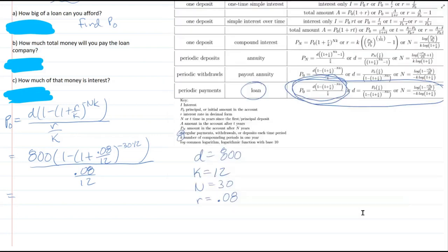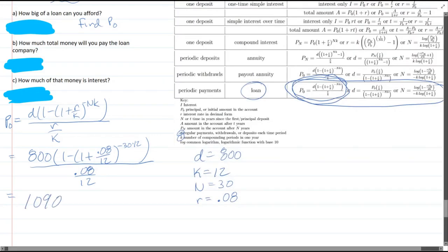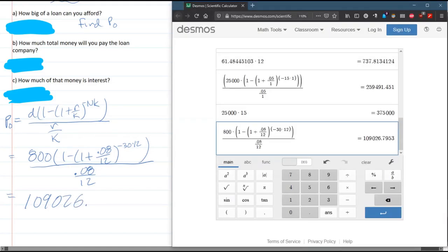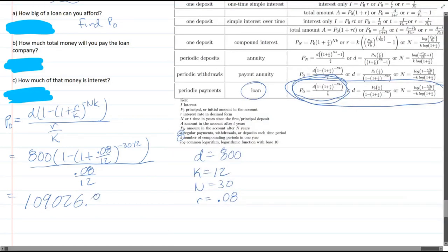109,026. And of course, because pennies are important, 79. We'll round it to 0.80. Okay, so that is the loan amount.